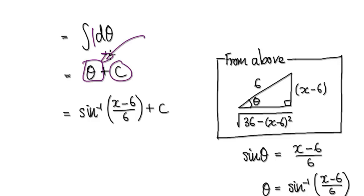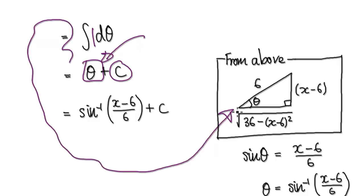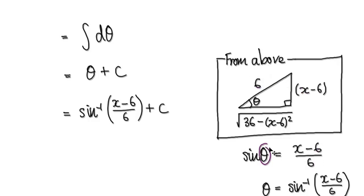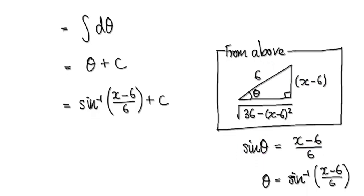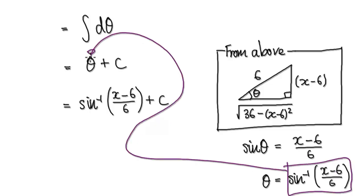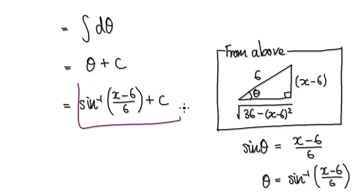But we don't want the answer in terms of theta, so we would go back to our original diagram and then translate this theta. If you look at sine theta equals opposite over hypotenuse, and if you want theta, then theta equals inverse sine of this. So now you can put this back into here, and that will give you this plus your constant. So your final answer would be this.